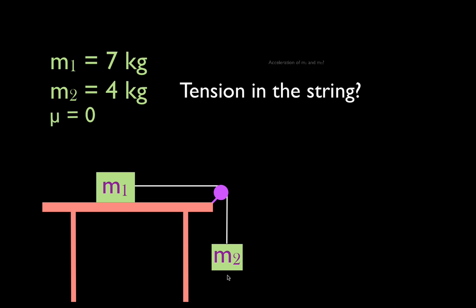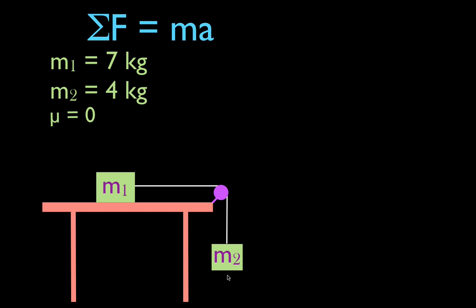To do that we are going to use Newton's second law: the sum of the forces is equal to mass times acceleration. The acceleration is equal to the sum of the forces divided by the mass. These two objects are attached to each other by the massless inelastic string, and that means they're going to have the same acceleration. m1 and m2 are going to accelerate at the same rate.